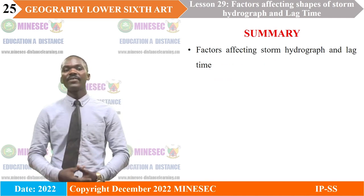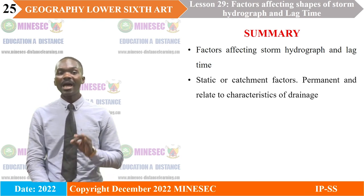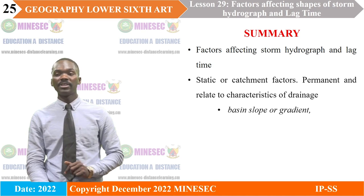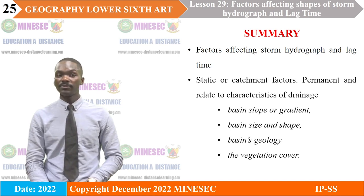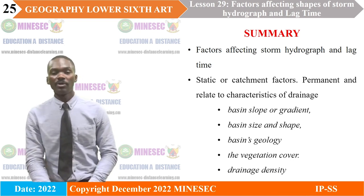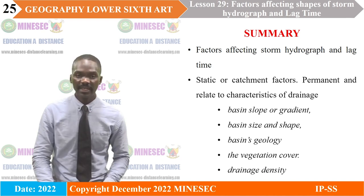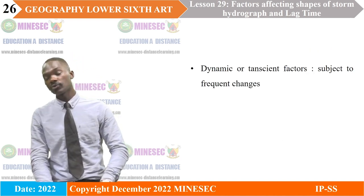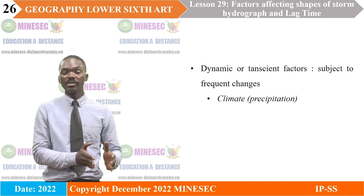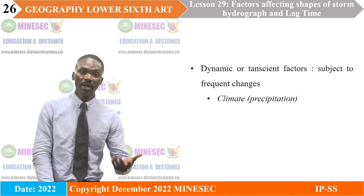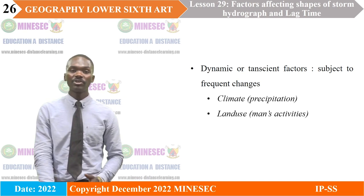In summary, the factors affecting storm hydrograph and lag time are: the static or catchment factors — which are permanent factors relating to characteristics of drainage — being basin slope or gradient, basin size and shape, basin geology, basin vegetation cover, and drainage density. The dynamic or transient factors are subject to frequent changes: these fall within climate, most especially precipitation, and land use through man's activities of deforestation, urbanization, and farming.